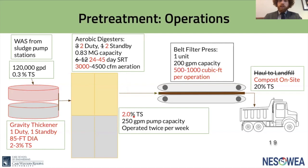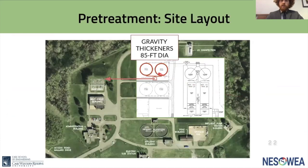These solids will come out at a consistent 2% total solids and will still be processed twice per week, producing 500 to 1,000 cubic feet per operation — all of which will now be composted on site at 20% total solids rather than landfilled. This renovation involves retrofitting the previous chemical thickeners, reinstalling their drives, renovating sludge pump station number one, and adding pumping from sludge pump station number three to the thickeners and then to the digesters.